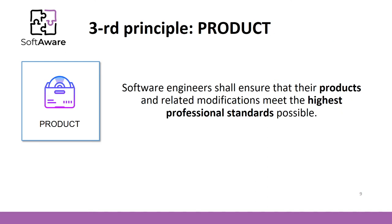Another principle is product. Software engineers shall ensure that their products and related modifications meet the highest professional standards possible. As a software engineer, you need to strive for high quality, acceptable cost, and a reasonable schedule. You should also ensure adequate testing, debugging, and adequate documentation.